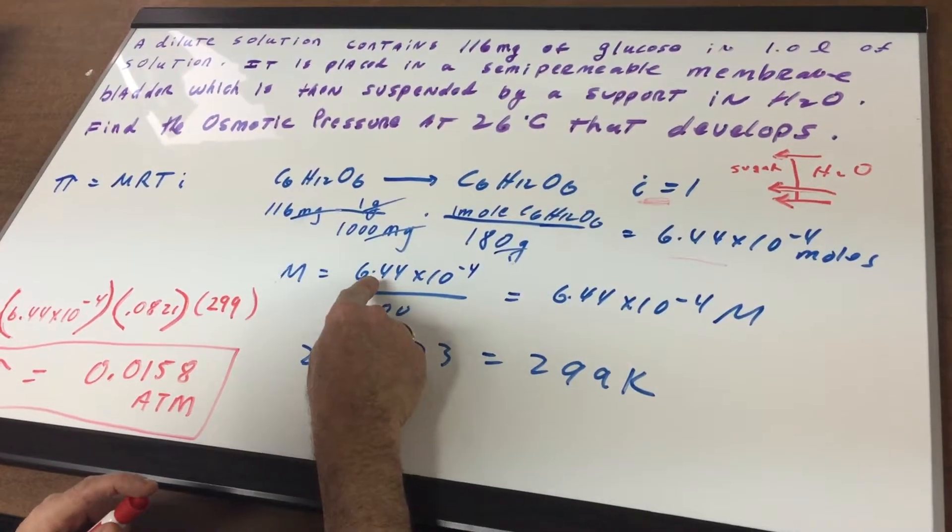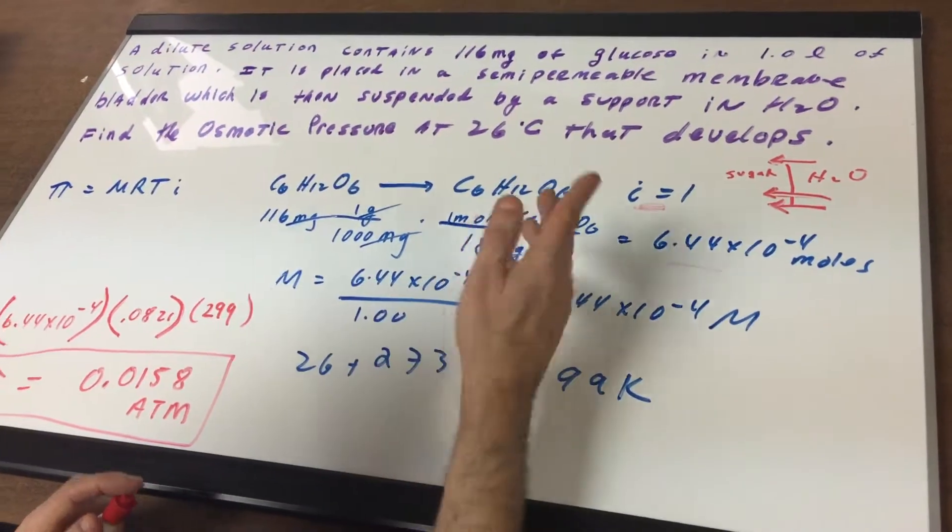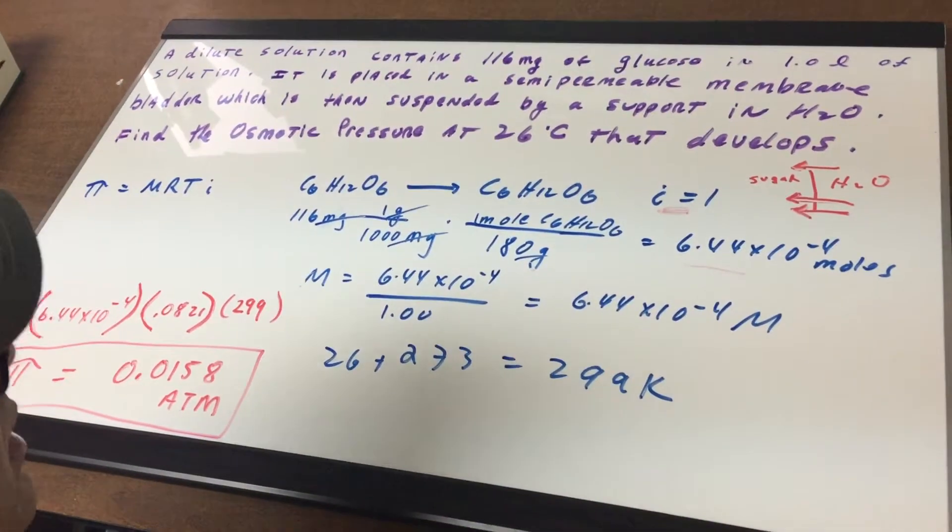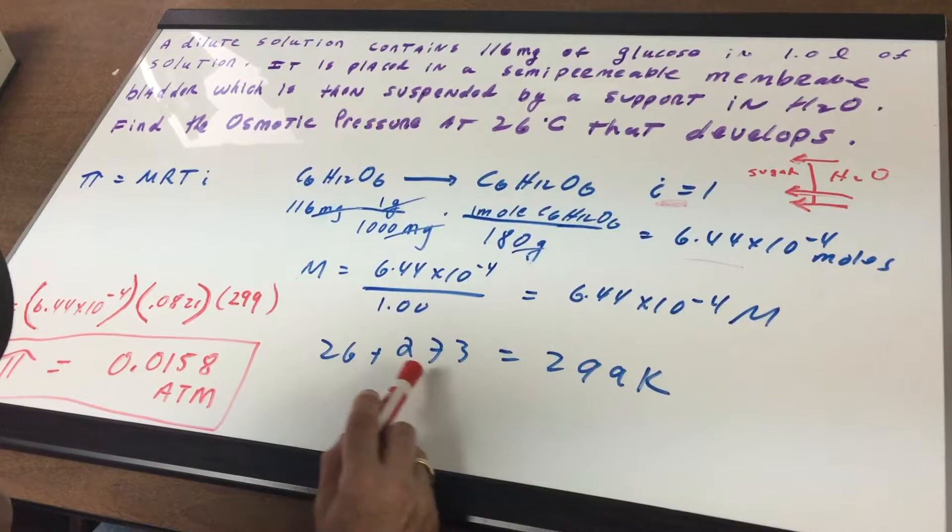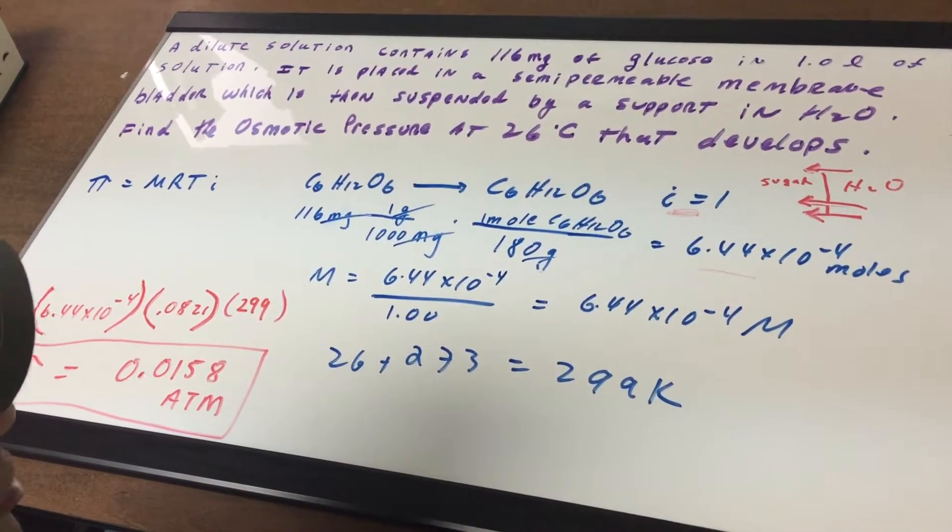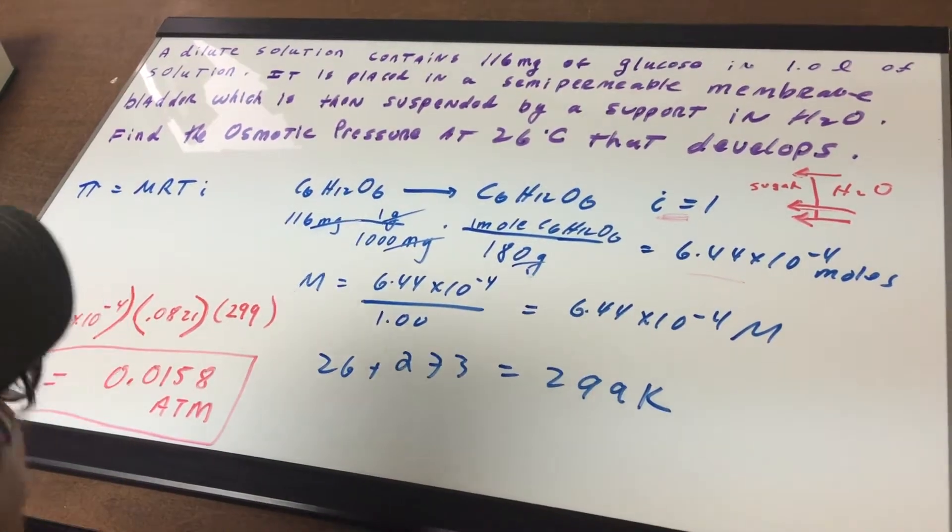So the molarity would be the moles over the liters. We saw that it's 1 liter, and that gives me 6.44 times 10 to the minus 4 molar. I then convert Celsius into Kelvin by adding it to 273, and that will give me 299. If that was the actual data, I would use 300.